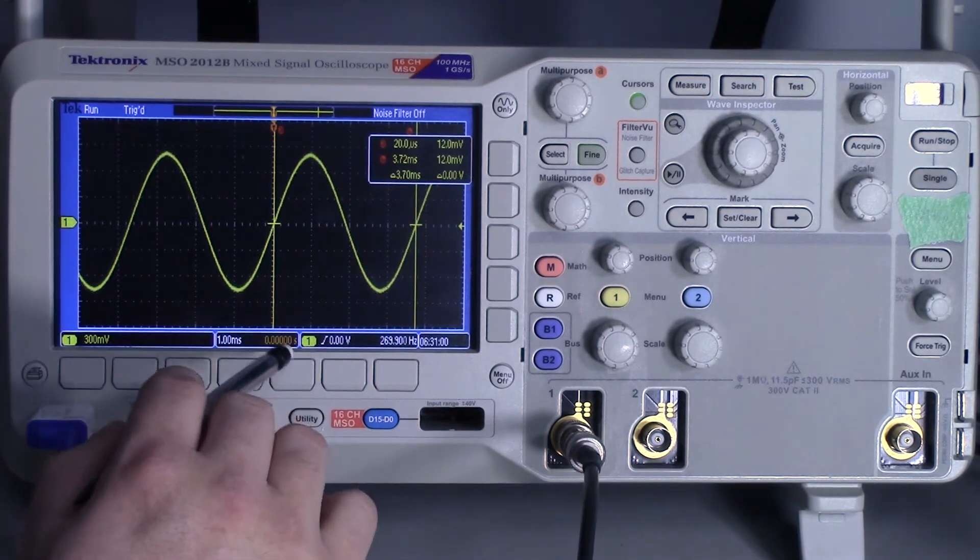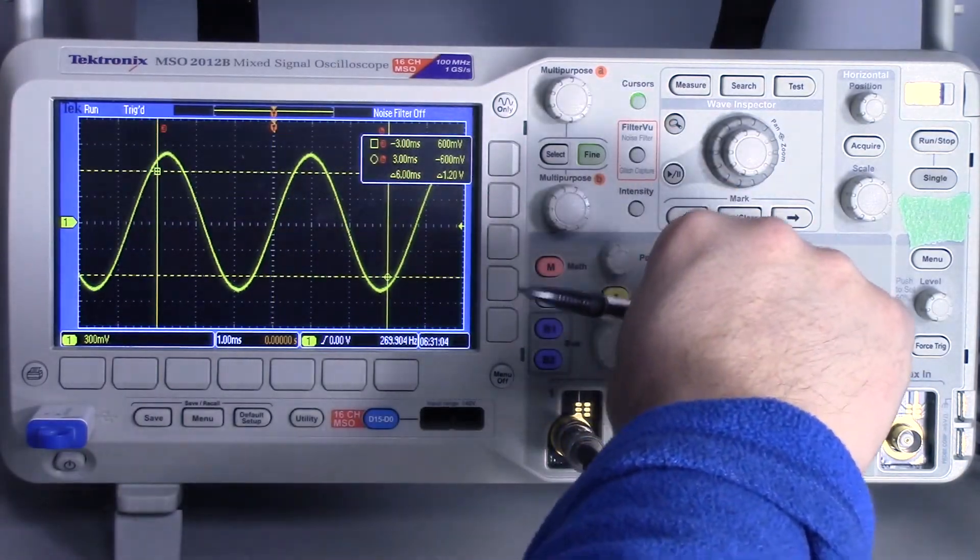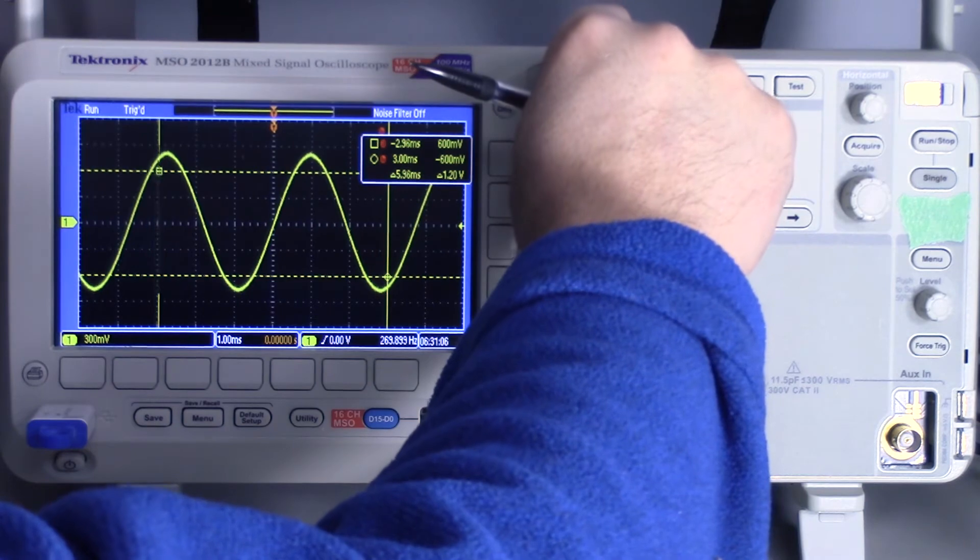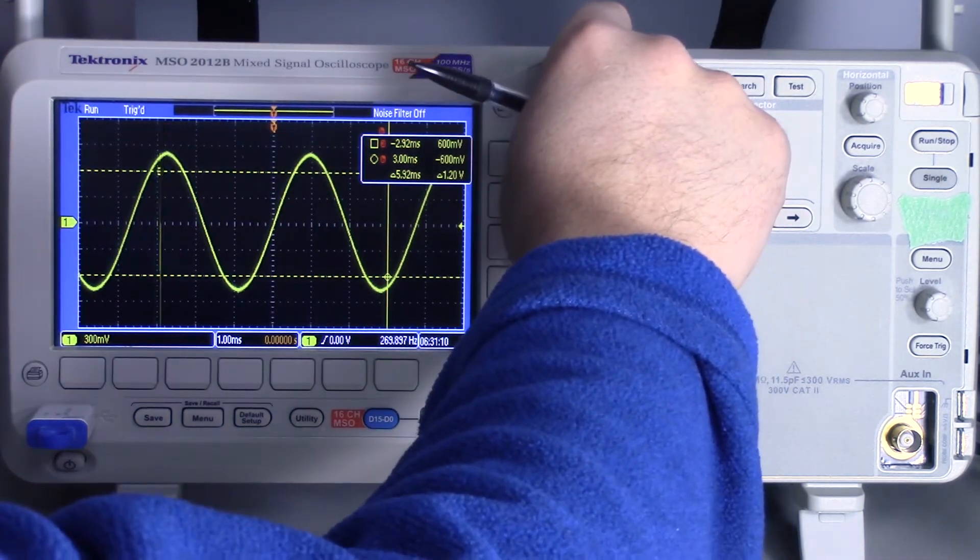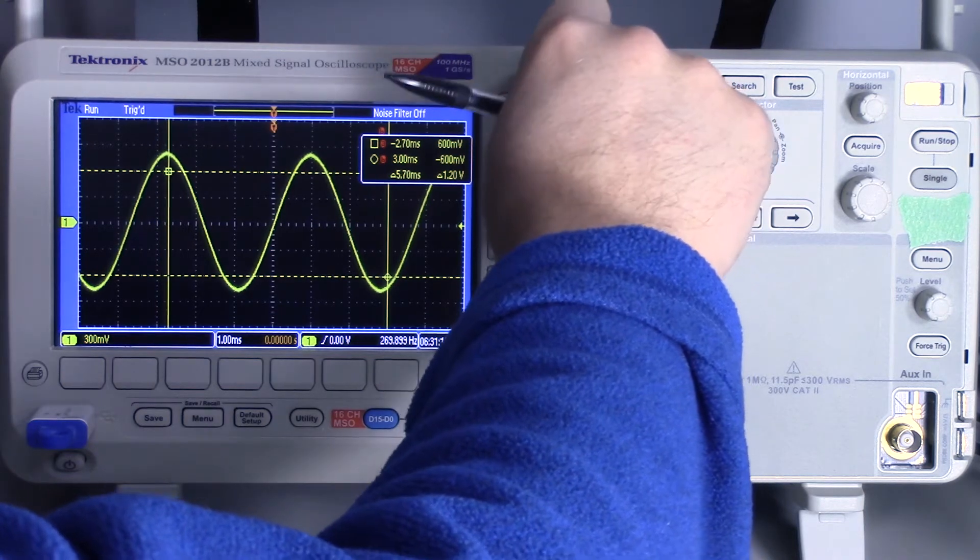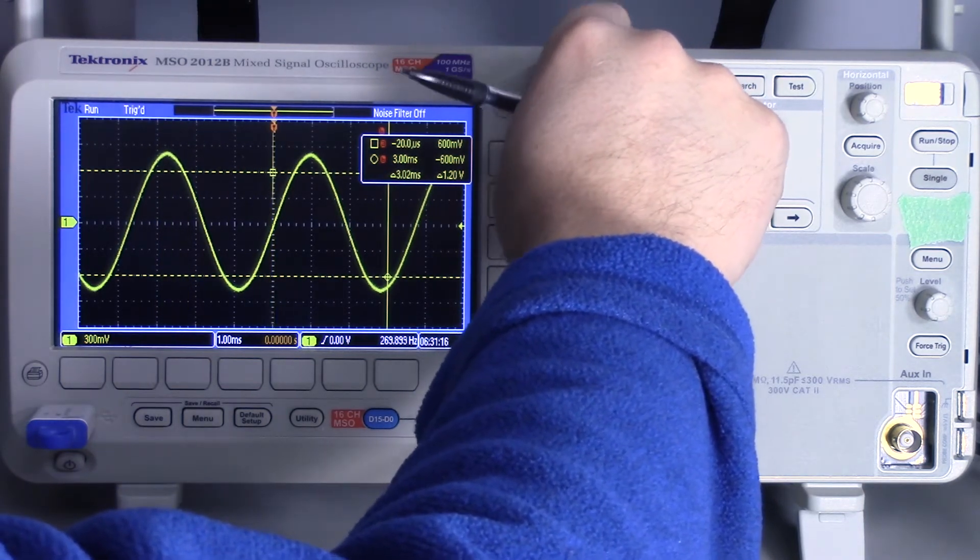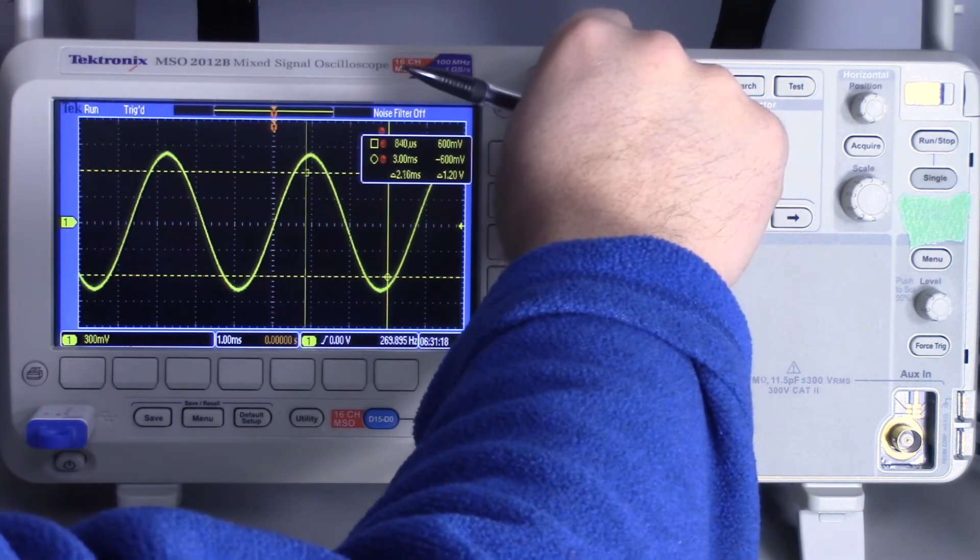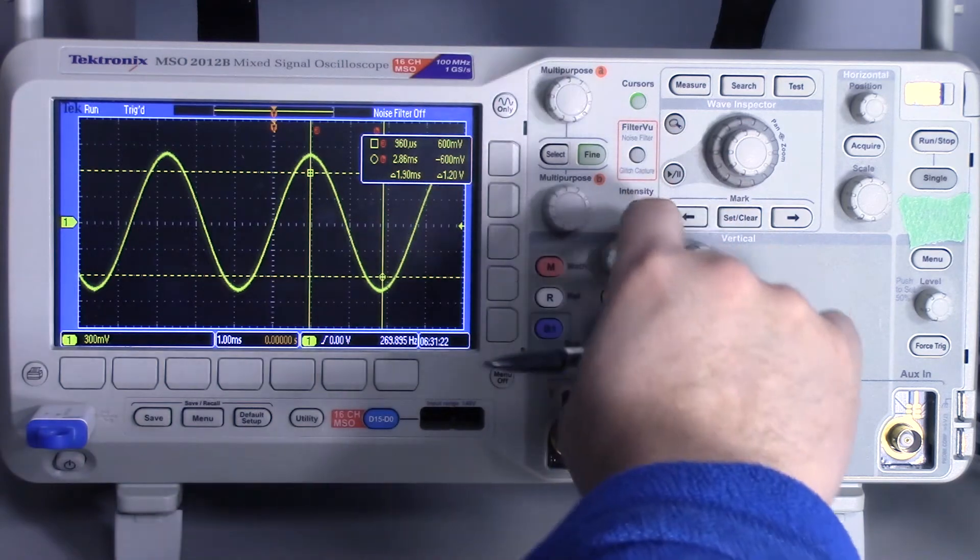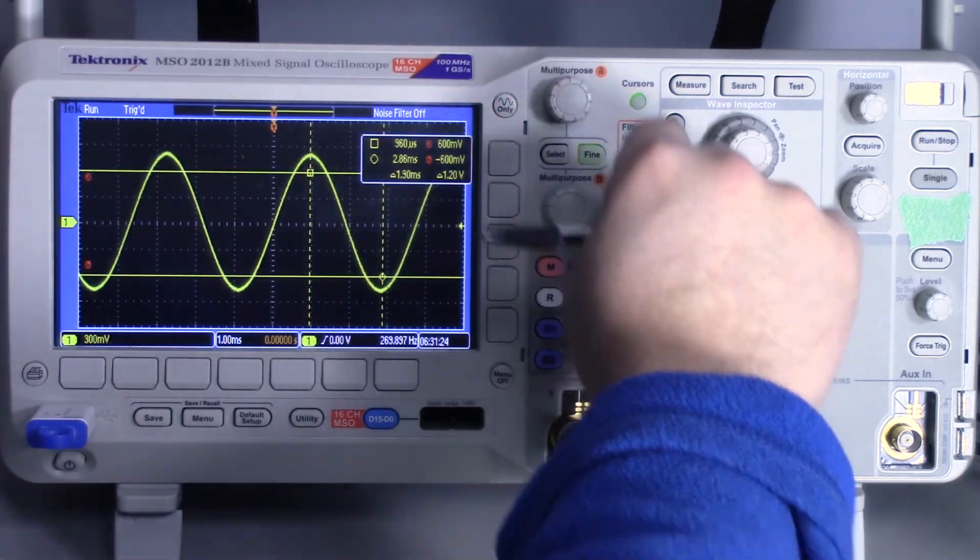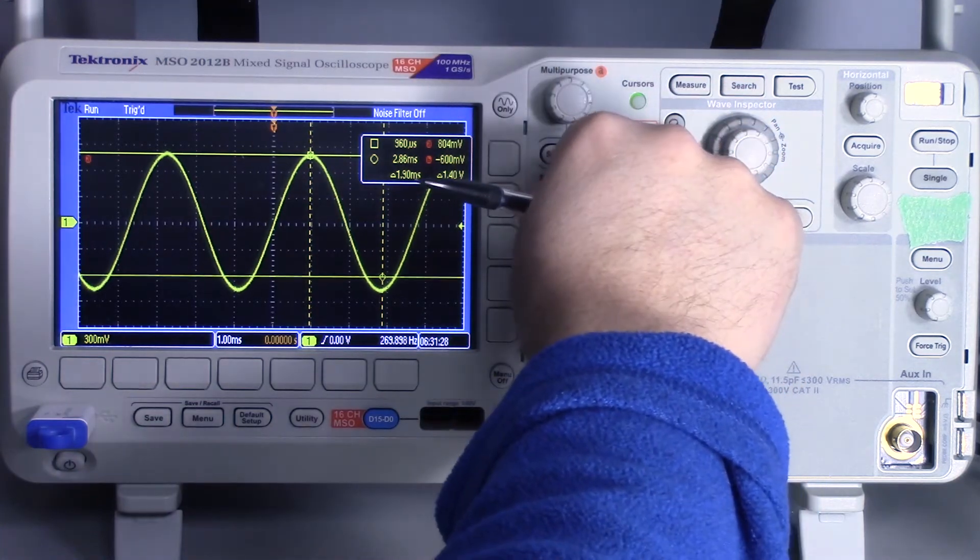Now you can also use the cursors to measure not only the horizontal, but also the vertical. So for that, we just press the cursors twice. And we can line up where we want to measure. So I'm going to measure between that peak and that peak. I'm going to click select.